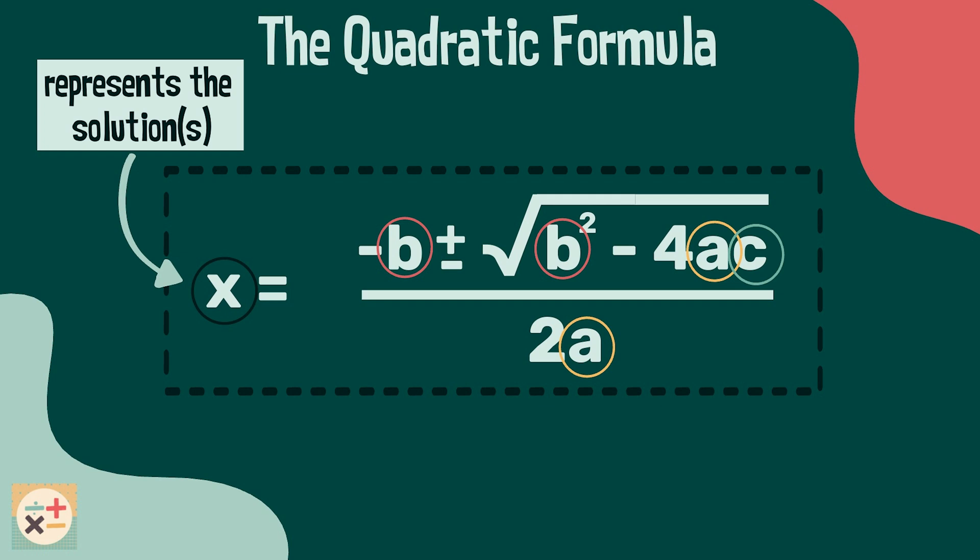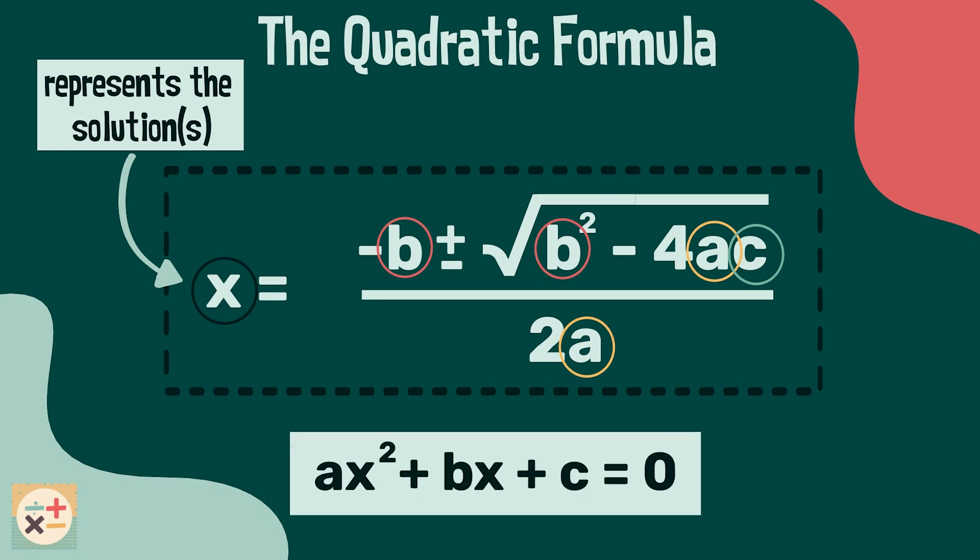The values a, b and c represent the values in the standard form for a quadratic equation. As a reminder, here is the standard form of a quadratic. We can now match these values to the ones in the quadratic formula.